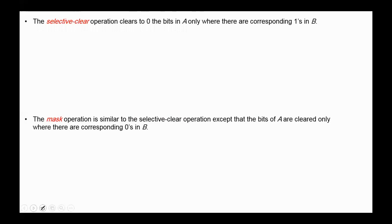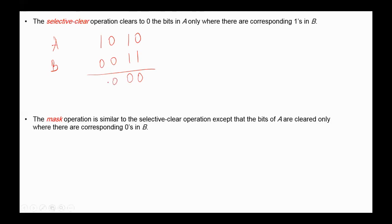Next, selective clear: the selective clear operation clears to 0 the bits in A only where there are corresponding ones in B. Again, if we have A as 1010 and B as 0011, we clear bits in A where B has ones. The remaining bits in A are unchanged. The selective clear micro operation can be written as A AND NOT B.